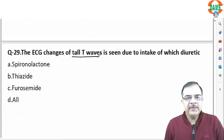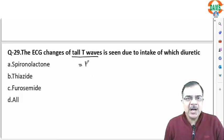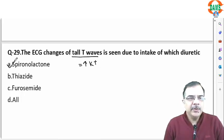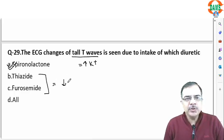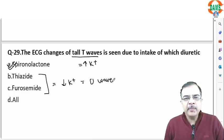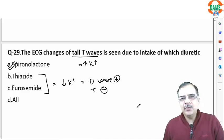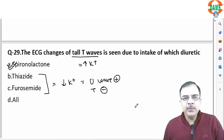Question 28: tall T waves are highly suggestive of hyperkalemia, which can be caused by spironolactone. Thiazide and furosemide cause hypokalemia, in which U waves become prominent and T waves are reduced or absent.